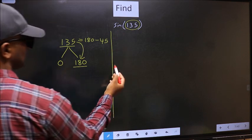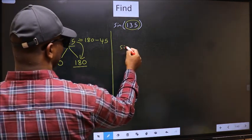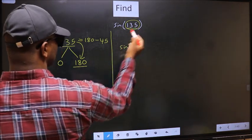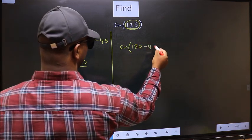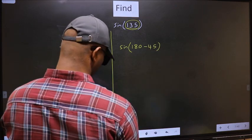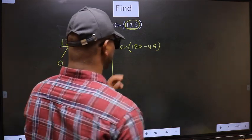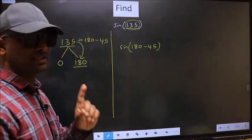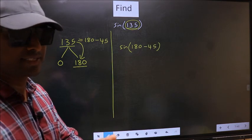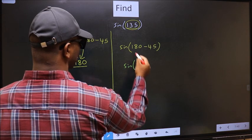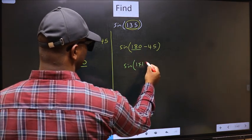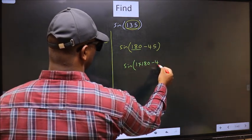So this will become sine. In place of this, we should write this: 180 minus 45. This is your step 1. Next, sine. In place of 180, now I write 1 times 180 minus 45.